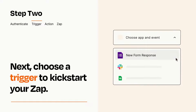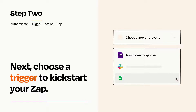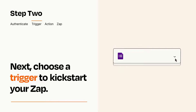Now let's set up your trigger, which is the event that starts your Zap. Pick the trigger event that you want from the list. When you set up this step, your Zap will pull in test data from your trigger app, that you'll see later when setting up your action app.